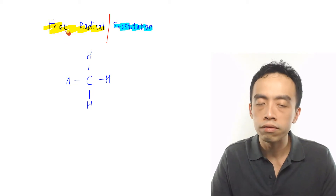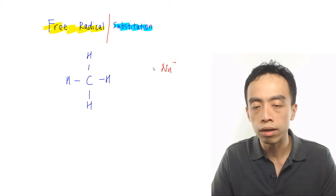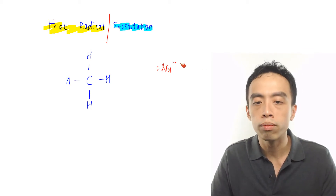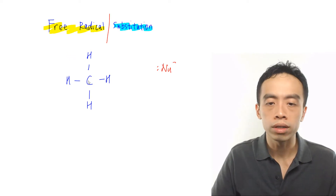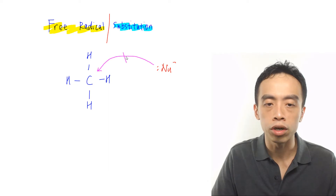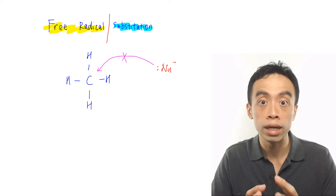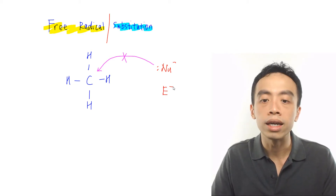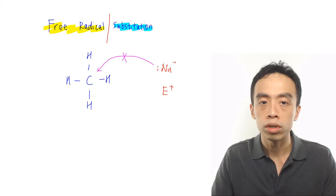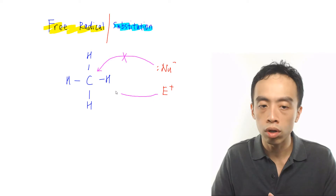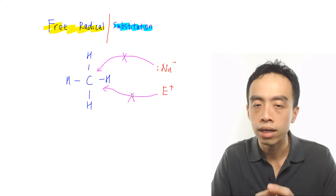Now if my carbon is not positively charged, then it is not capable of attracting a negative species, which is our nucleophile. We annotate nucleophile as NU- with a lone pair. So because my carbon is neutral, my nucleophile will not attack my carbon because my carbon is not positively charged. Similarly, because my carbon is not negatively charged, it doesn't attract my electrophile, which is positively charged — written as E+. So my carbon will also not be able to react with my electrophile. There's no reaction between my electrophile and my alkane carbon.